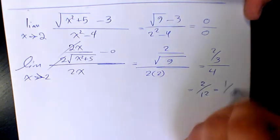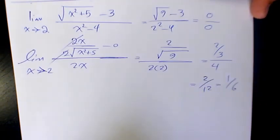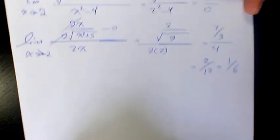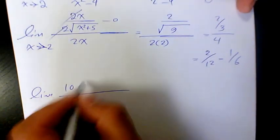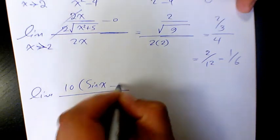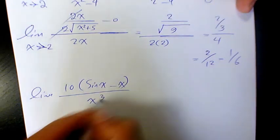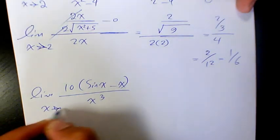twelve or one over six. Next example is limit of 10 sine x minus x over x cubed when x approaches zero.